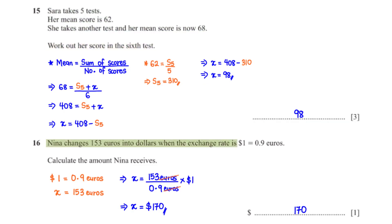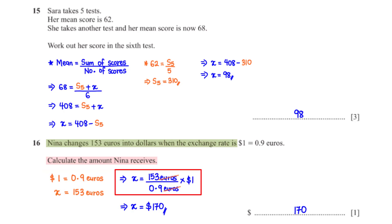Nina changes 153 euros into dollars when the exchange rate is 1 dollar equals 0.9 euros. Calculate the amount Nina receives. First, we set up the conversion ratio. When we cross multiply and make x the subject, when we type this into the calculator, we get 170 dollars.